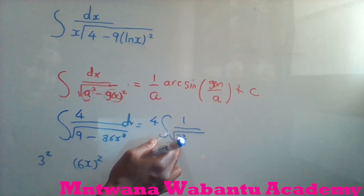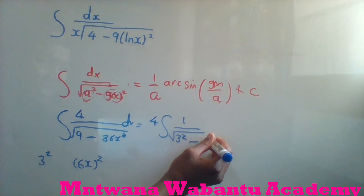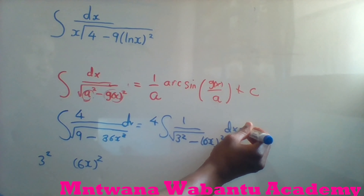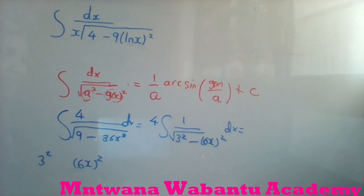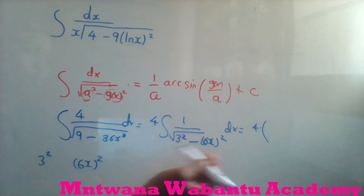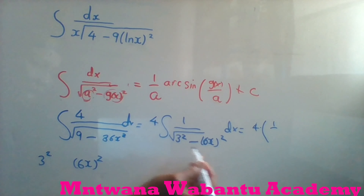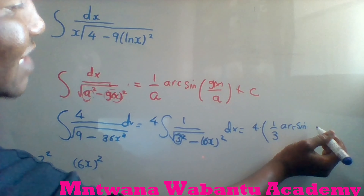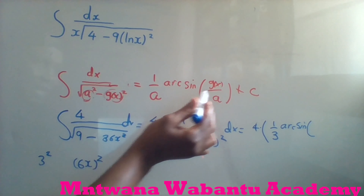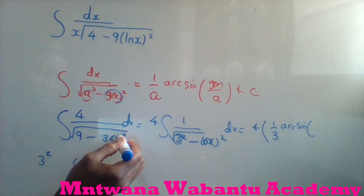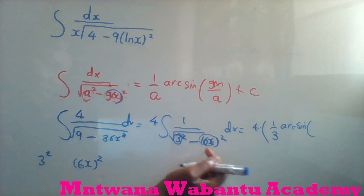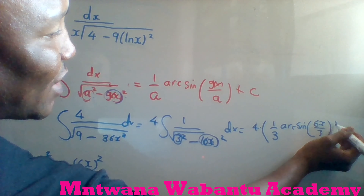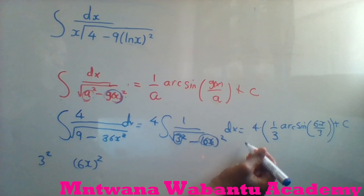It's going to be 4 times the integral of 1 over the square root of 3² minus (6x)², dx. Remember it has to be a² minus (g(x))² format otherwise this rule won't work. So 9 means 3², and 36 means 6, so g(x) is 6x. Now following the formula: one over a, where a is 3.